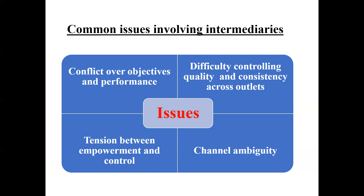Then there is difficulty controlling quality and consistency across outlets. It is not possible that a similar kind of product or similar consistency in service will always be available. For example, if one outlet is in Pithoragarh, one in Haldwani, one in Delhi, and one in Bangalore, the same type of service — whether a parlour or a restaurant — the same food and same taste should be there. Maintaining that consistency is a difficult task.